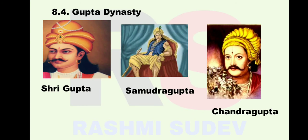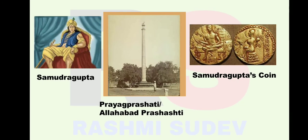8.4 Gupta Dynasty: At the end of the third century, the Gupta Dynasty started to rise. The Guptas were in power for three centuries. Sri Gupta was the founder king of the Gupta Dynasty. Samudragupta and Chandragupta II were other notable kings. The Gupta Empire was established by Chandragupta I, and his son was Samudragupta.